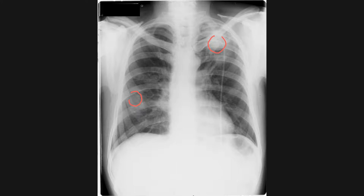Aspergillomas are fungus balls which grow in pre-existing cavities in the lungs. Patients who have had previous TB, bronchiectasis, or any lung disease that causes cavities are at risk of aspergillomas growing in one of these cavities.